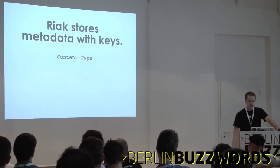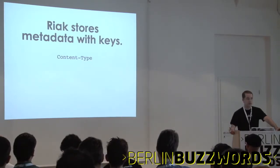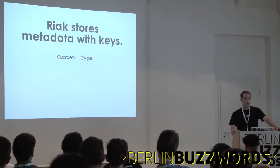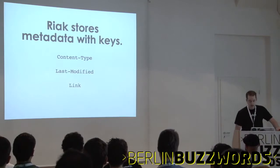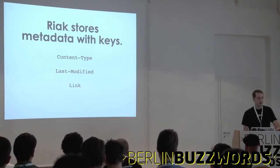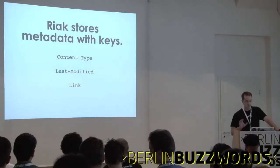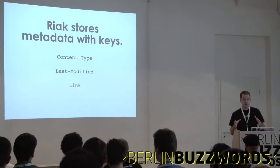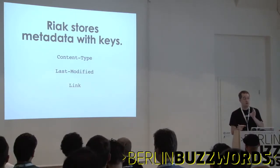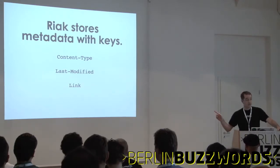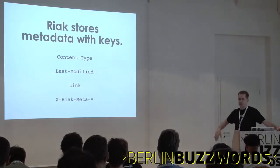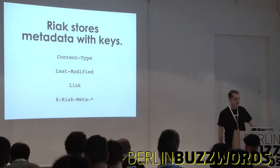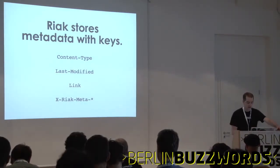Riak also stores metadata with your keys. Whenever you send a key into Riak, you need to provide a content type — is this JSON, XML, a serialized Java object? It also keeps things like the last modified date. You can use the Link header in HTTP to connect objects. When I say 'object' in this presentation, it means the value combined with the metadata. You can relate objects to one another via links, which are basically like links in HTML. You can also provide extra headers for user-specific metadata that only your application cares about.